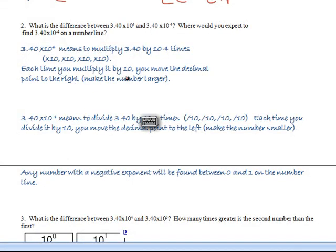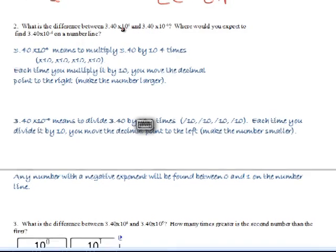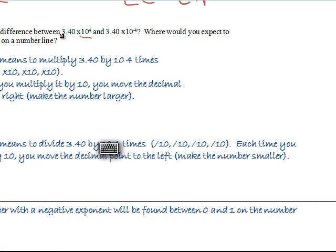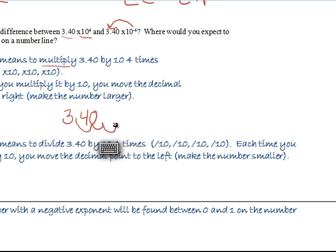What's the difference between 3.40 times 10 to the 4th and 3.40 times 10 to the negative 4th? A positive exponent means the number is going to get bigger than the original. When you have 3.40 times 10 to the positive fourth, you multiply 3.40 by 10 four times. So: 3.40 becomes 34, then 340, then 3400, then 34000. Every time you multiply by 10, it gets bigger — and that is what the actual number is.